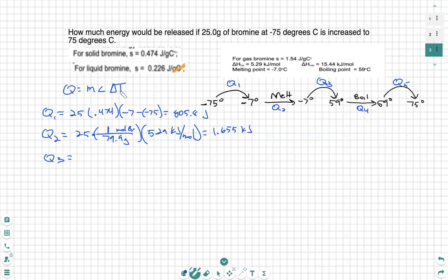Next, what we're going to need to do is find Q3. Q3 is a normal MCΔT because we have a change in temperature. So we have mass times now the specific heat for liquid bromine, which is 0.226 joules, and then we'll have temperature change, which is final minus initial. We're going to plug that all into the calculator. 25 times 0.226 times 59 minus negative 7. 372.9 joules.